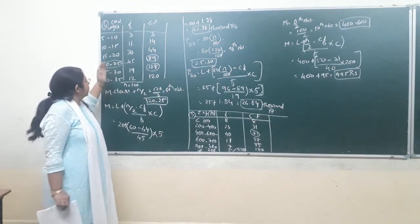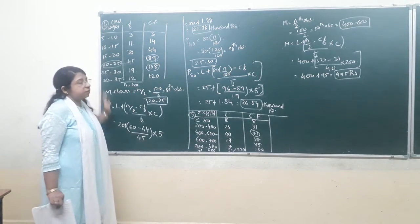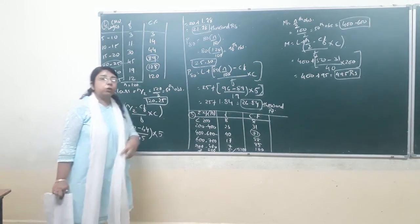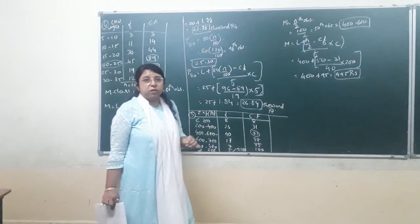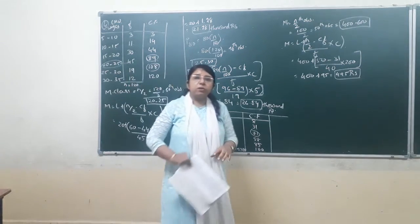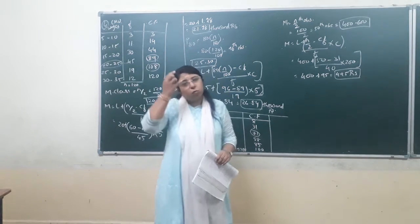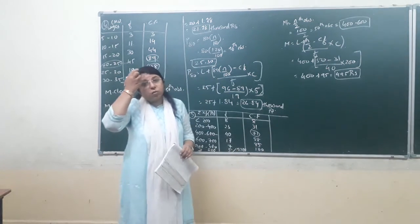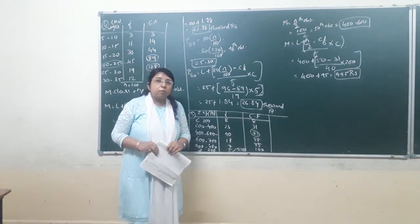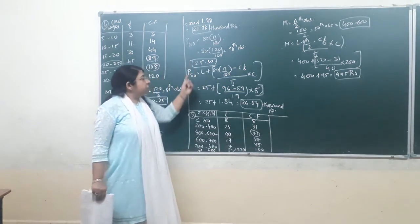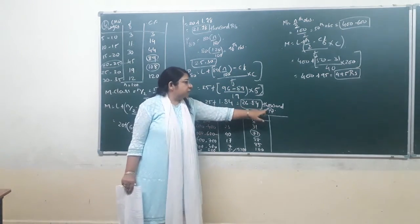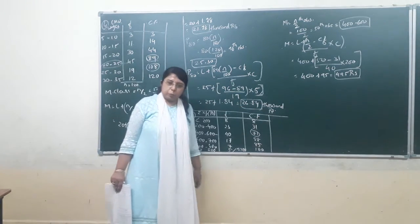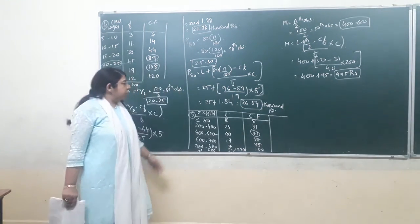All the class data for salary is given in thousands of rupees, so whatever answer comes for median or percentile, remember to put the unit: thousand rupees. The answer for P80 is 26.84 thousand rupees.